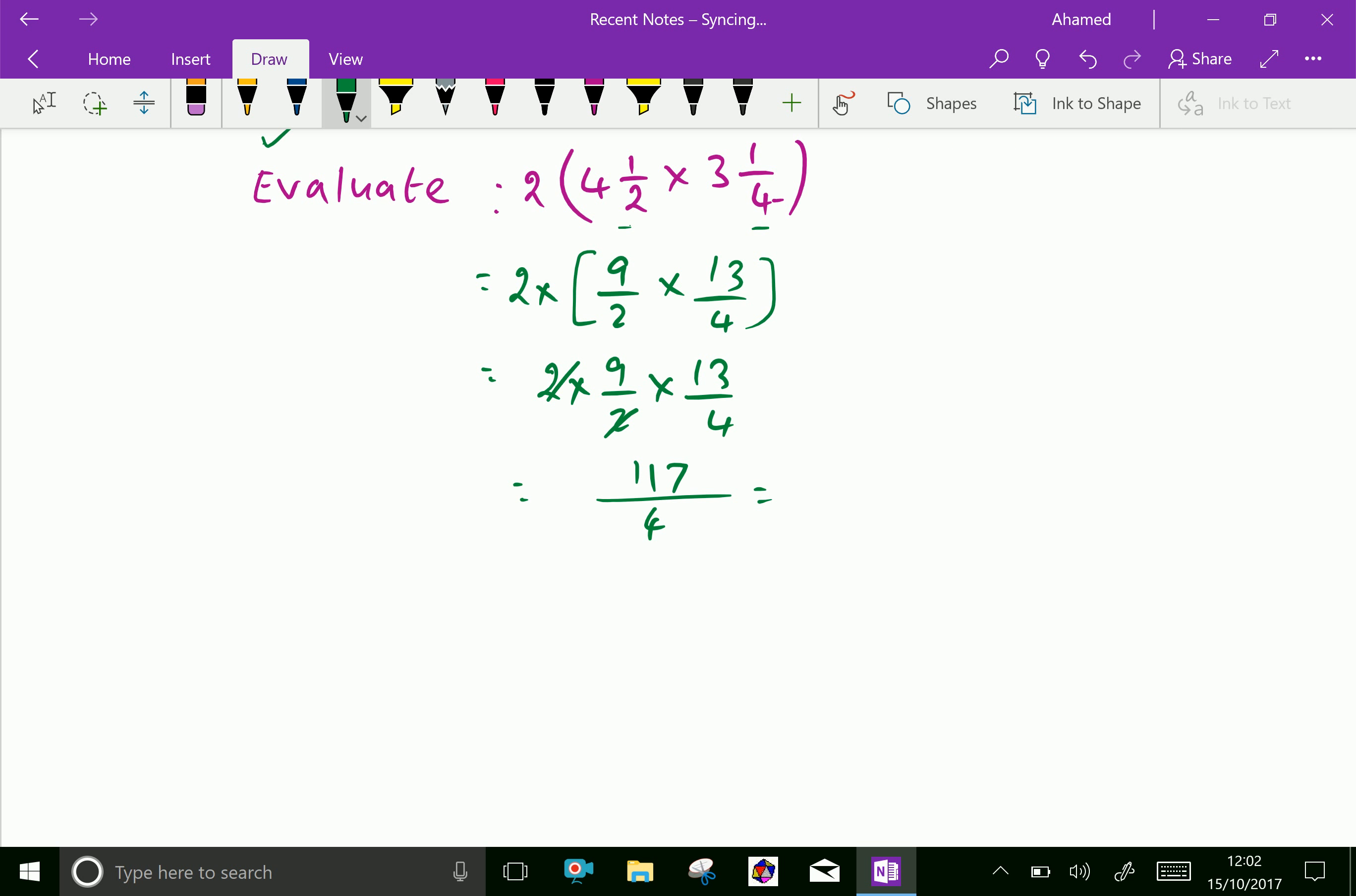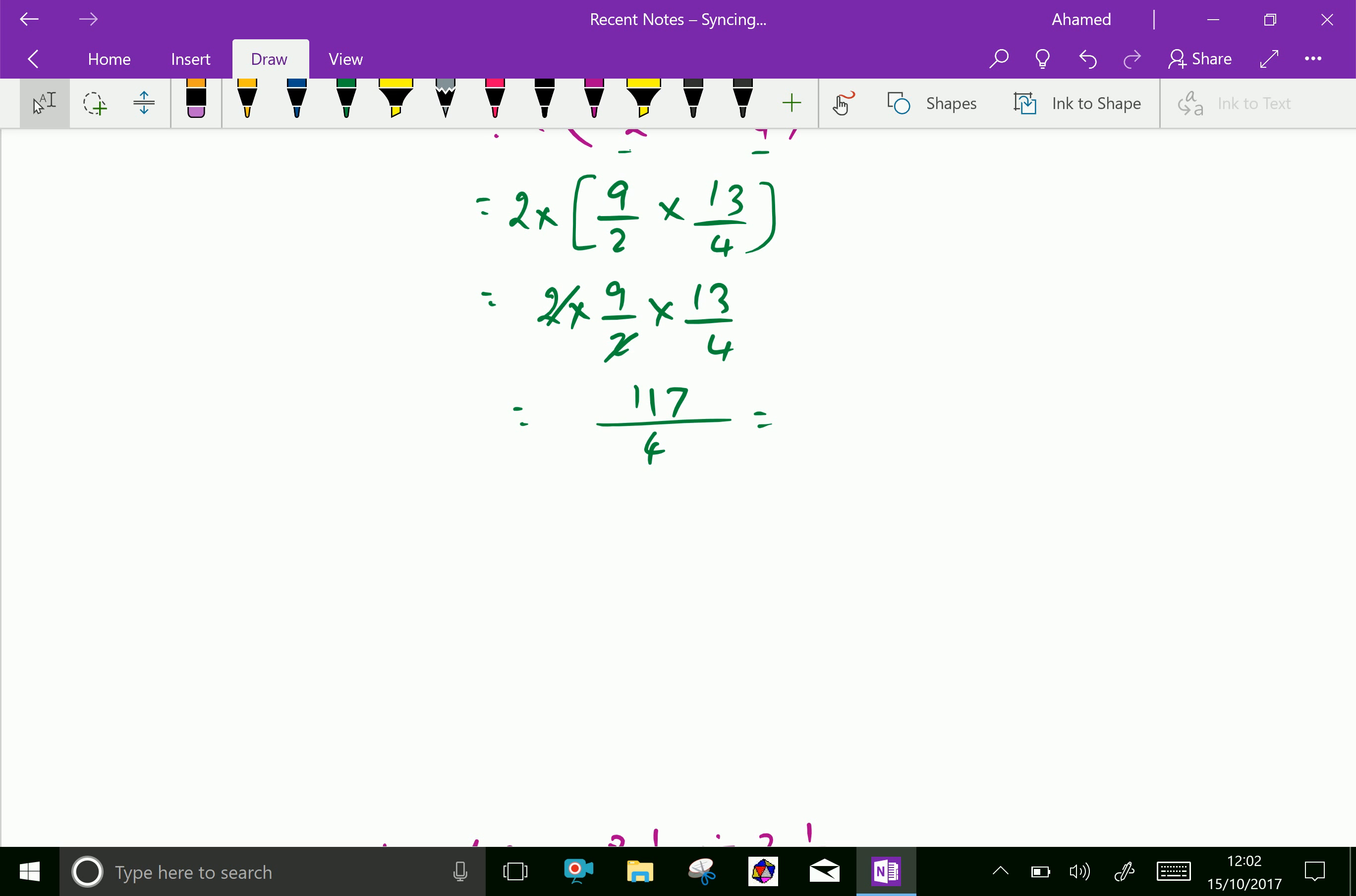We can make an improper fraction into a mixed fraction as 37 divided by 4 is 9 times 4 is 36 and one remainder, that 1 over 4, means 29 and 1 over 4 is the final answer.